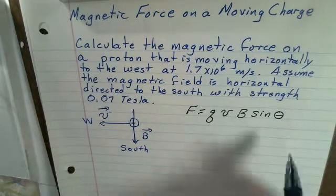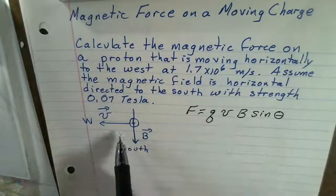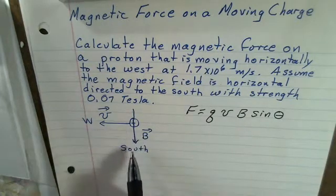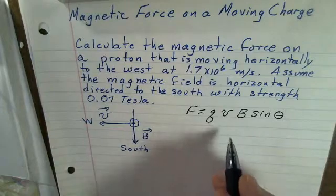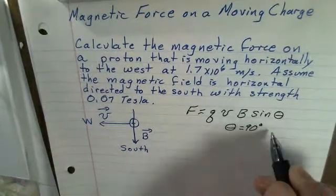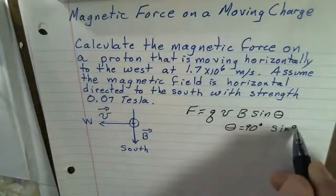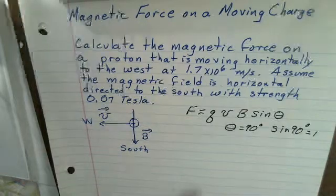Let's do the force magnitude first. In looking at this, the velocity is towards the west, the magnetic field is towards the south. There's 90 degrees between these two, so theta is 90 degrees, and I know that sine of 90 degrees is 1, so I won't have to worry about this sine factor.